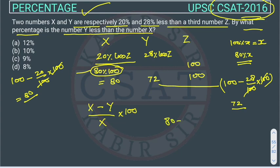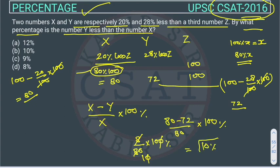So, X minus Y over X times 100: that's 80 minus 72 over 80 times 100, which equals 8 over 80 times 100. This 8 cancels with the 80 to give us 10%. So Y is 10% less than X.